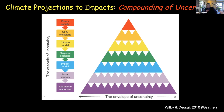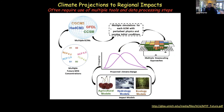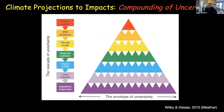Any time you go through that flow, you can create uncertainty. Uncertainty comes from the direction of future emissions, from differences between models in terms of sensitivity and output, from the downscaling process itself, and from the impacts model. The envelope of uncertainty grows as you go through this flow, and it's important to recognize where the uncertainty is coming from and how to work with it.